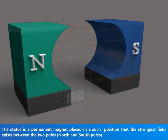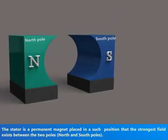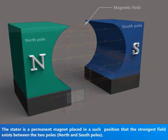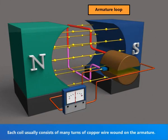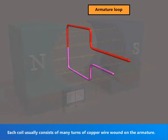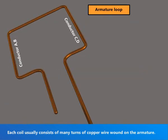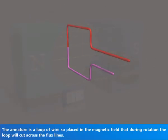The stator is a permanent magnet placed in such a position that the strongest field exists between the two poles, that is, north and south poles. Each coil usually consists of many turns of copper wire wound on the armature.